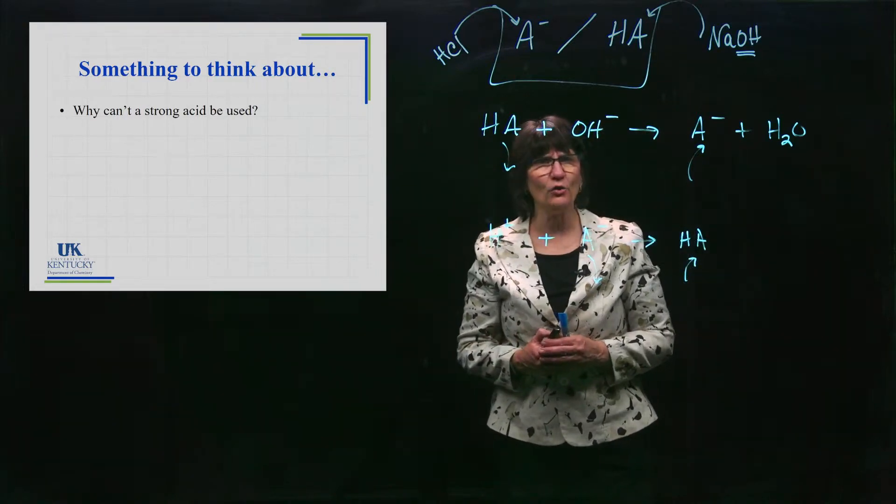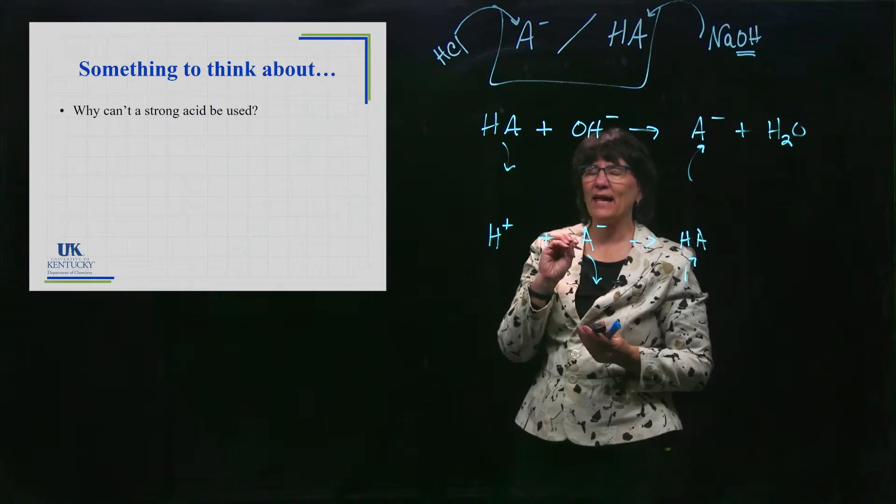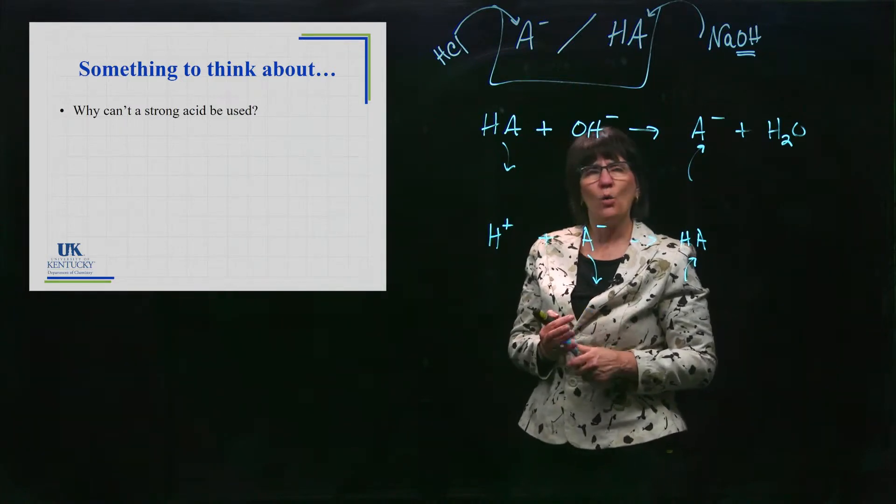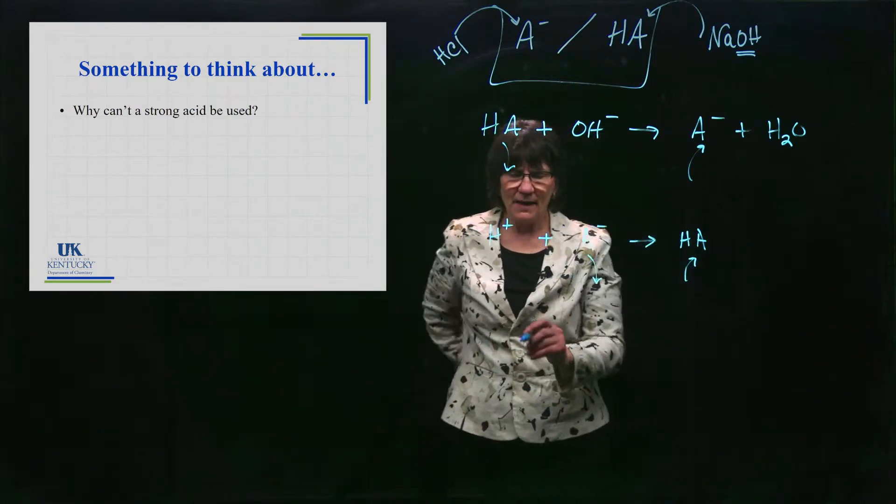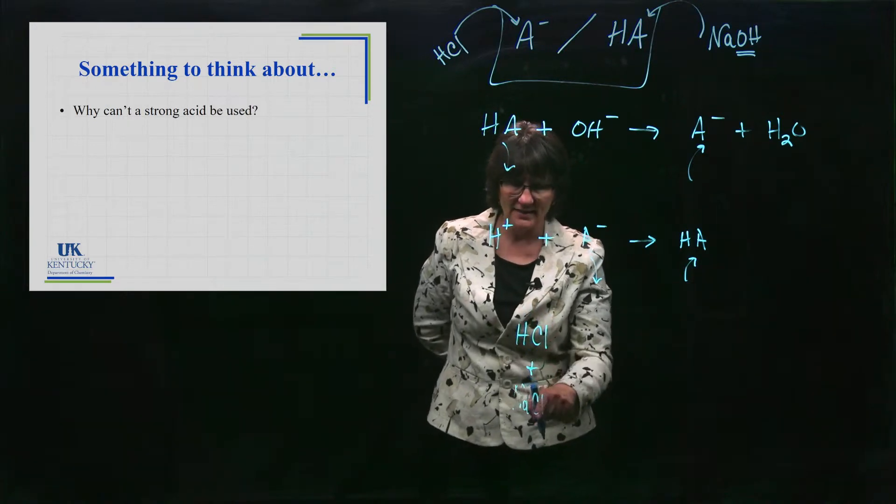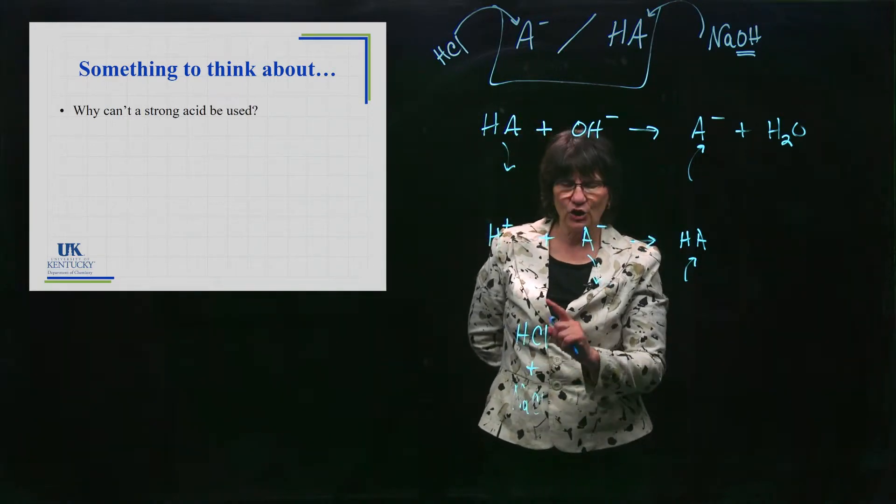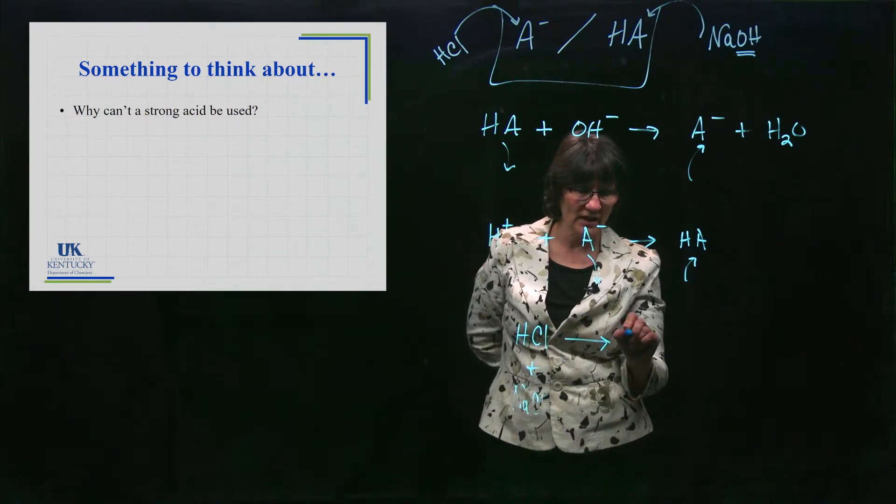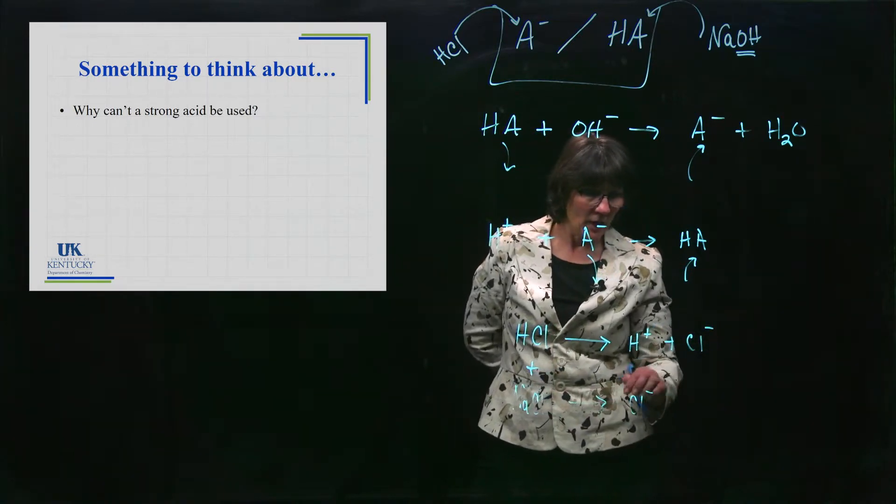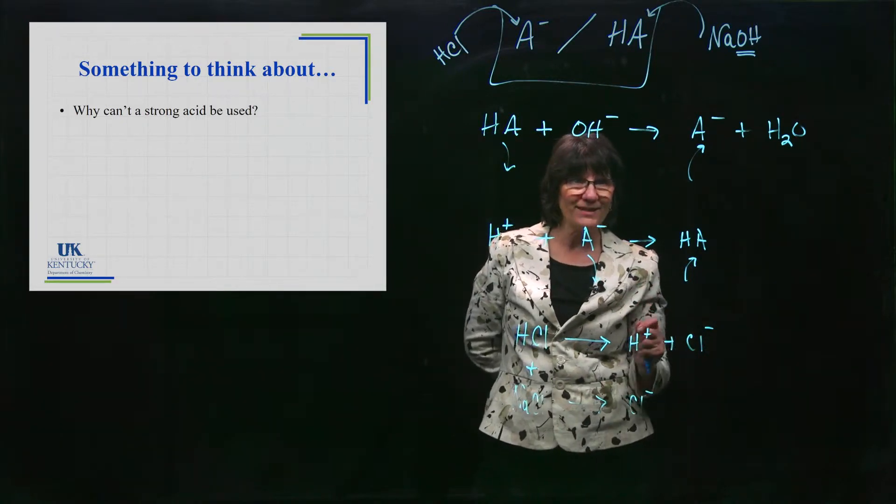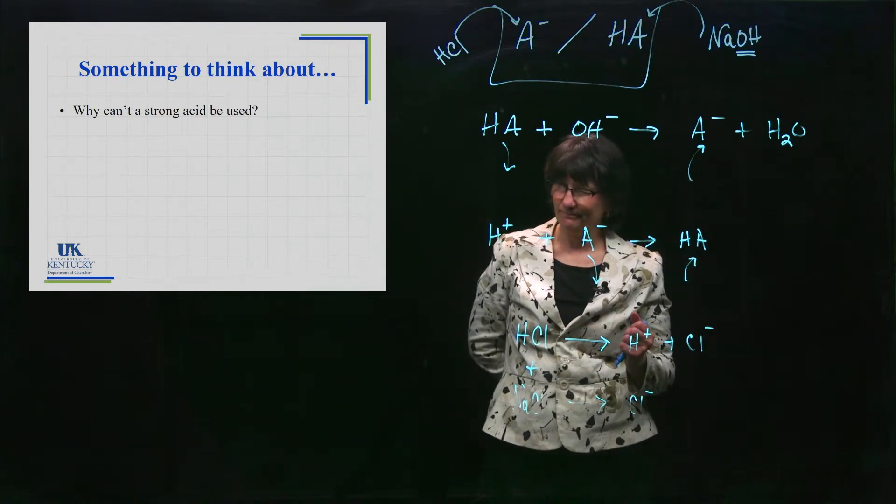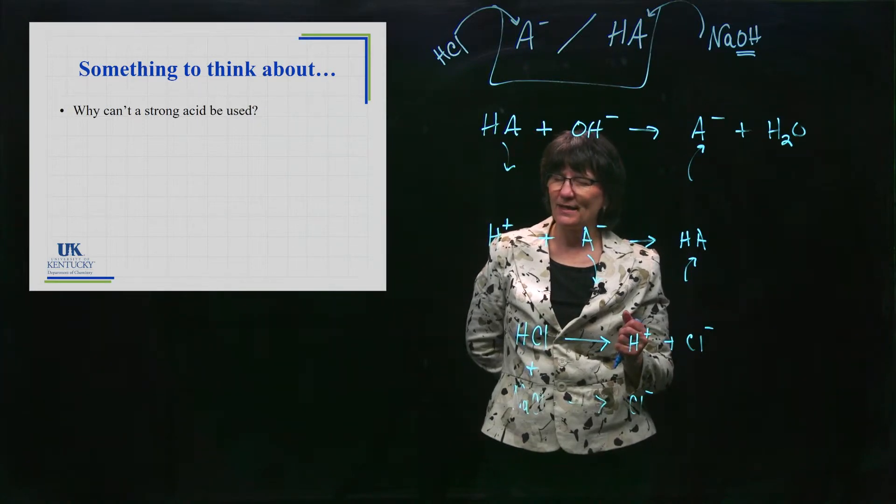Some things to think about. Why can't a strong acid be used? I told you that a buffer has a weak acid in its conjugate base. Why can't it be a strong acid in its conjugate base? Let's imagine a strong acid for just a minute. Let's imagine that we try to make a buffer with HCl and its conjugate base salt. There would be a strong acid in its conjugate base. What does this thing do when it goes into solution? It 100% breaks apart into these guys. We've got some Cl-. We've got all of this in there and there's nothing present to neutralize an added acid.